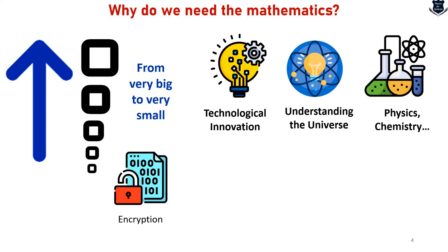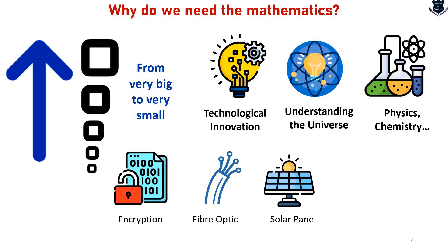We have also seen that encryption underpins the algorithms used in modern encryption, securing online transactions, communications and data storage. Fiber optic: the principles of quantum mechanics are used to understand and improve the transmission of light through optical fibers, which forms the backbone of the internet and telecommunication networks. Solar panels: understanding quantum states and electron behavior in materials has led us to design more efficient solar panels, making renewable energy more accessible and reducing reliance on fossil fuels. Battery technology has also been one of the most important areas coming from quantum physics.